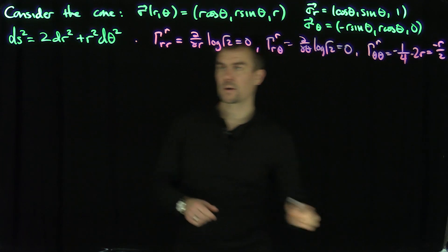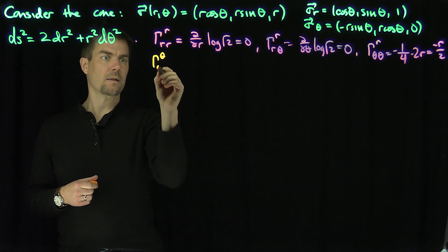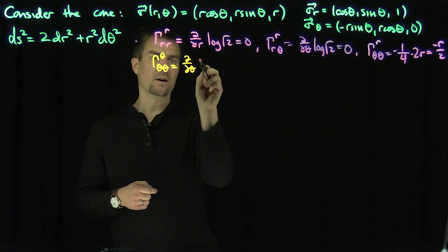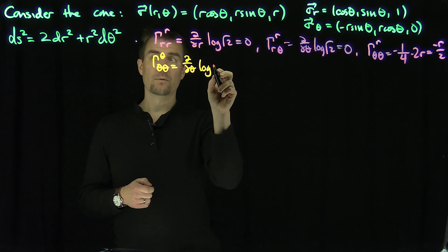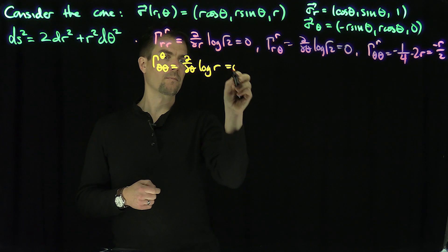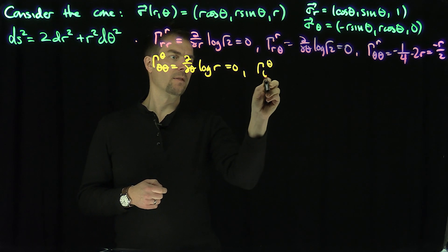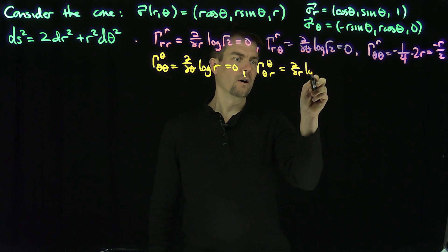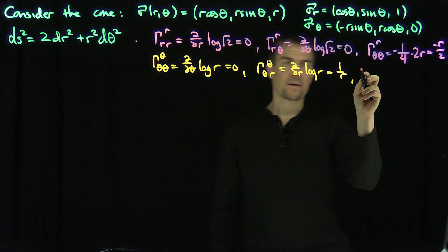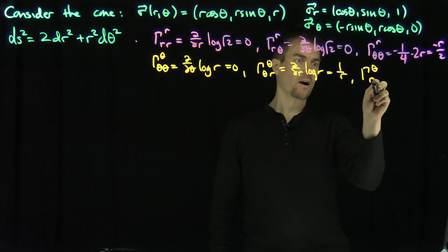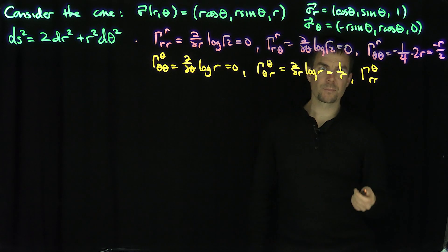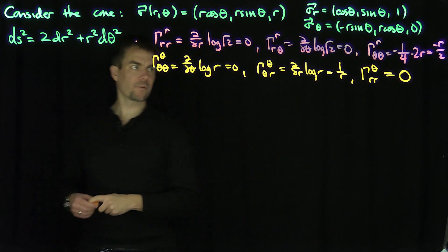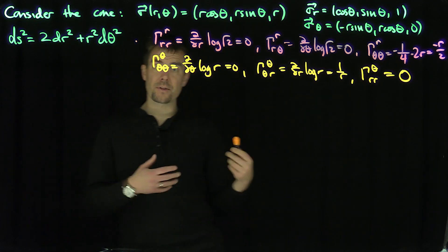Now let's do the theta Christoffel symbols. Gamma^theta_theta_theta is the theta-derivative of the log of the theta component of the metric, which is log(√r²) = log r, giving zero — wait, that's actually zero since there's no theta dependence. Gamma^theta_theta_r is the r-derivative of log r, which is 1/r. And gamma^theta_rr is zero since there's no theta dependence.